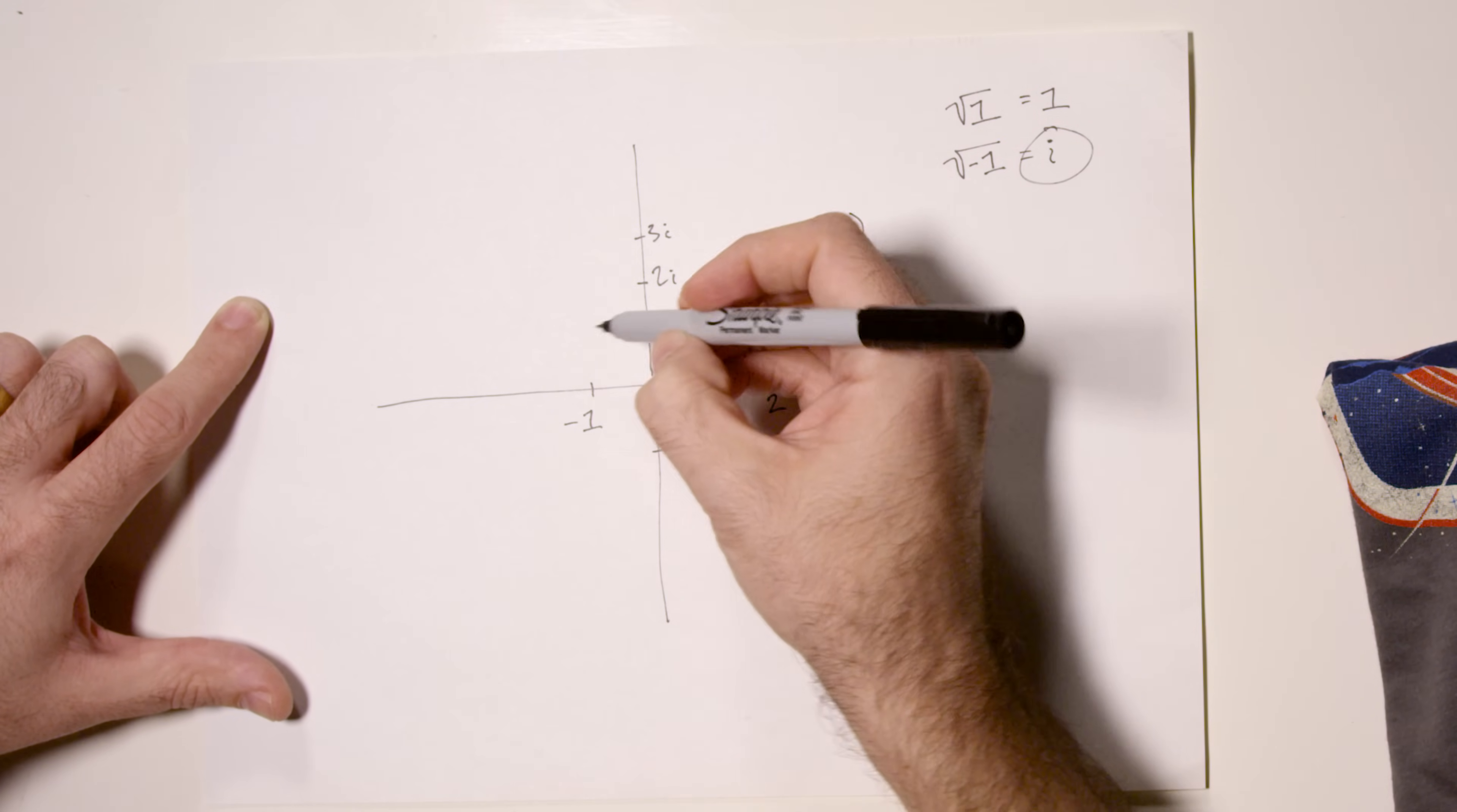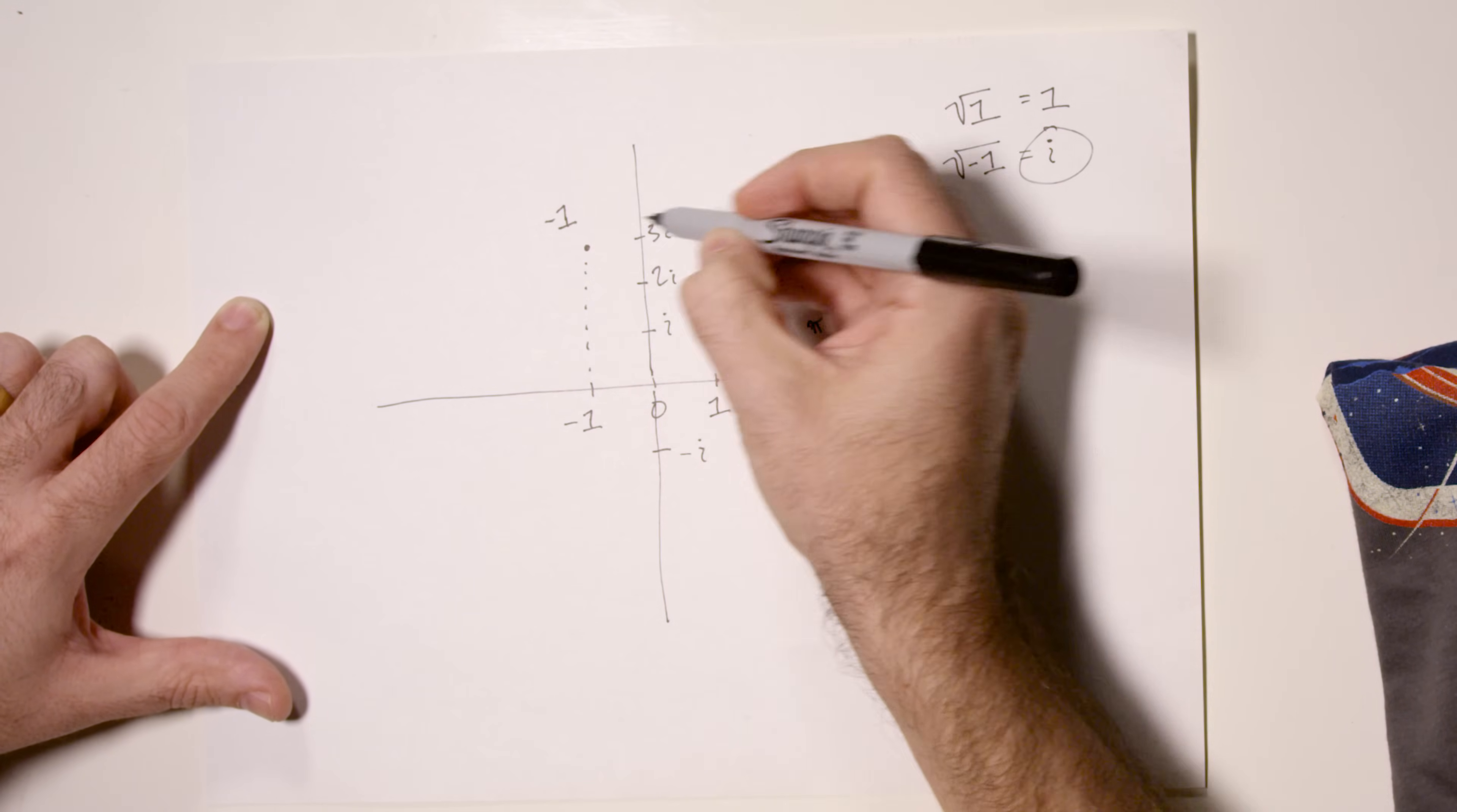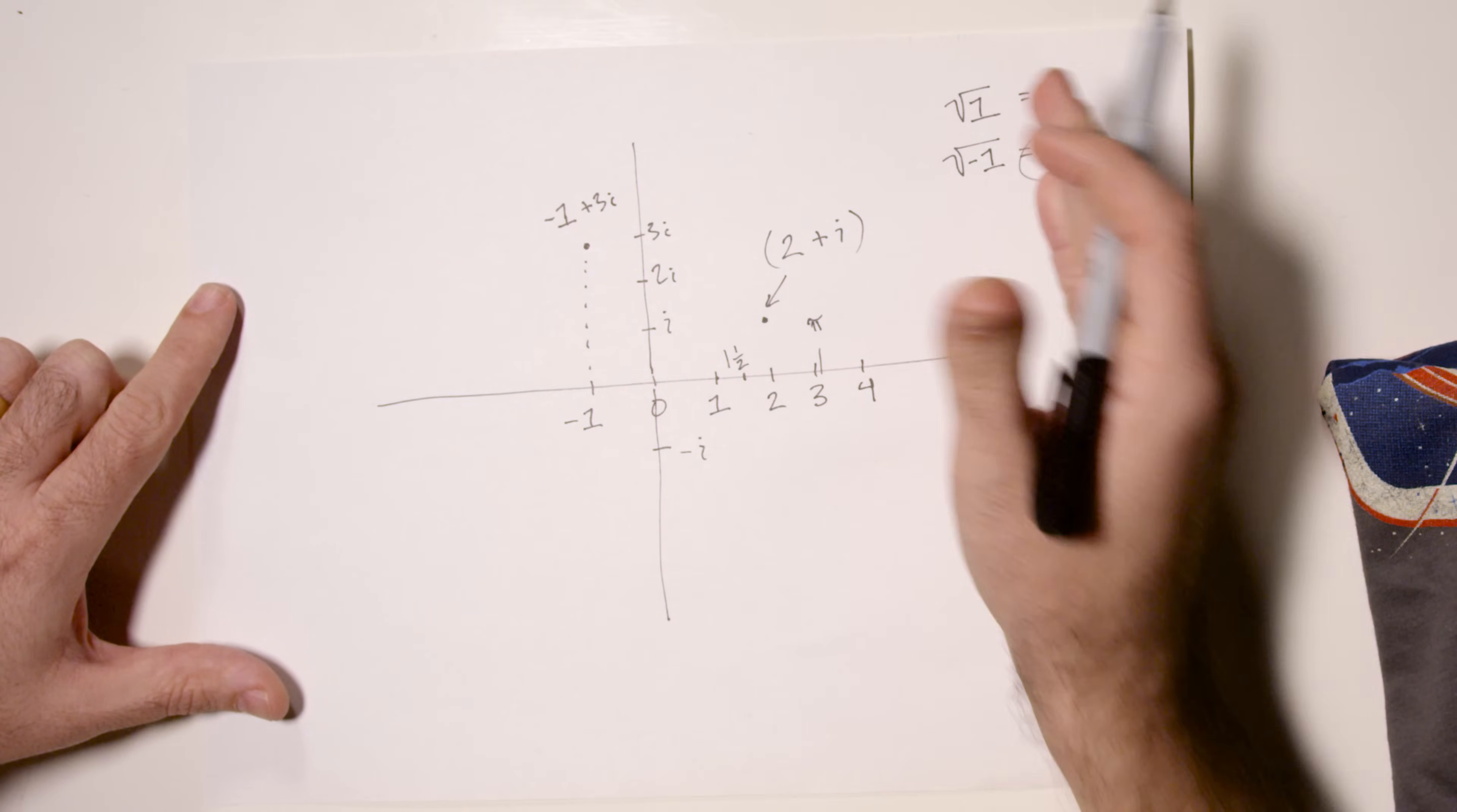A number like this one right here, that point. That point is negative 1. That's the real component. And the imaginary component is 3i. Negative 1 plus 3i is this number right there. Every number here is a complex number.